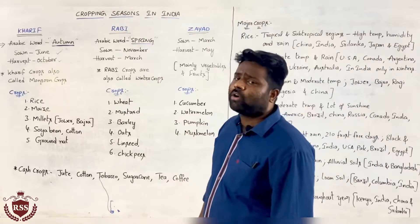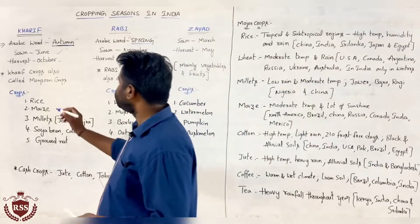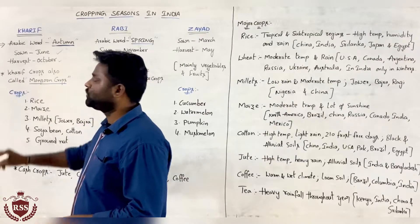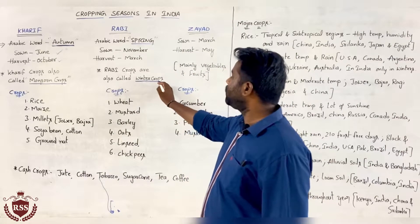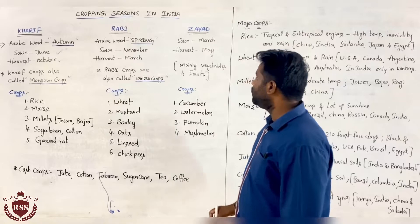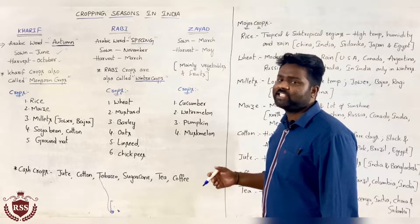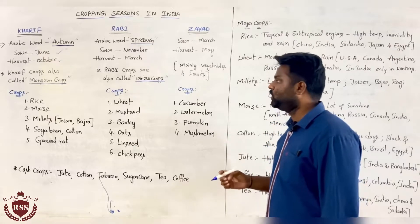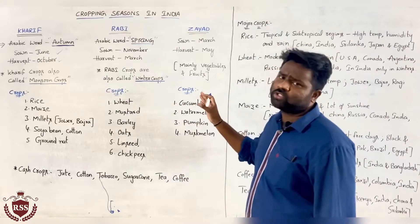Kharif crops are also called Monsoon crops. Rabi crops are also called winter crops. In the Zayad season, mainly vegetables and fruits are grown. There is no specific time, but mostly vegetables and fruits are harvested in Zayad season.